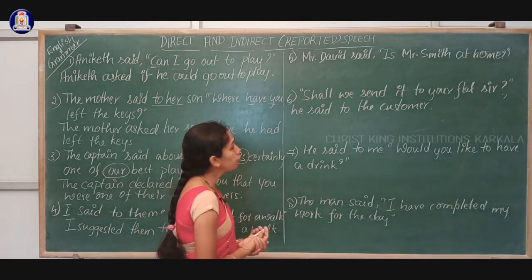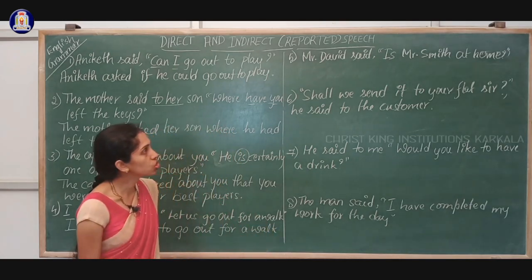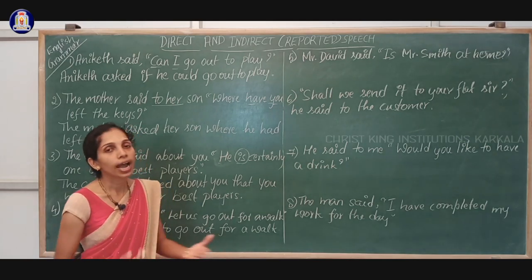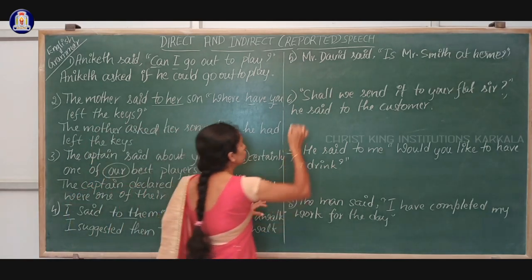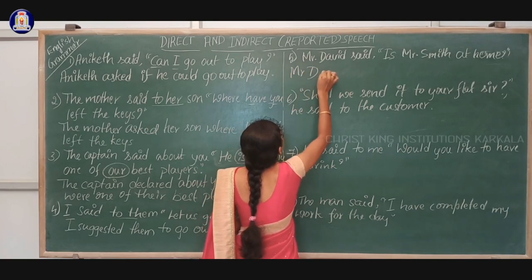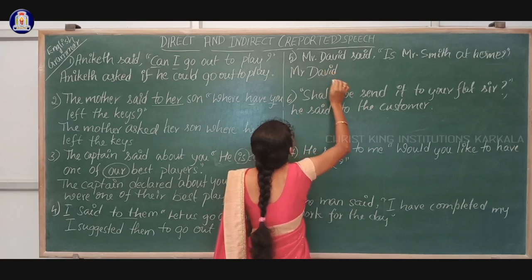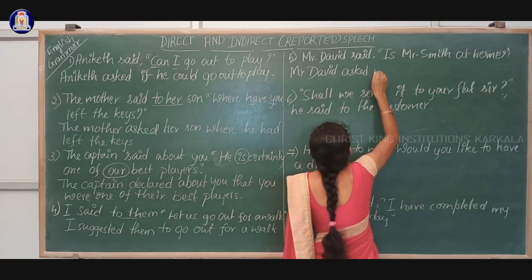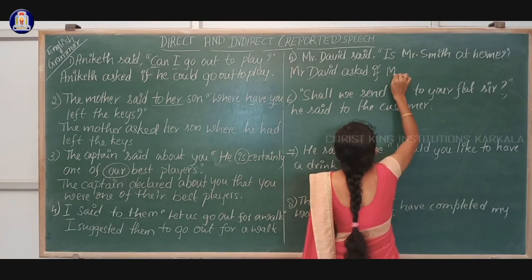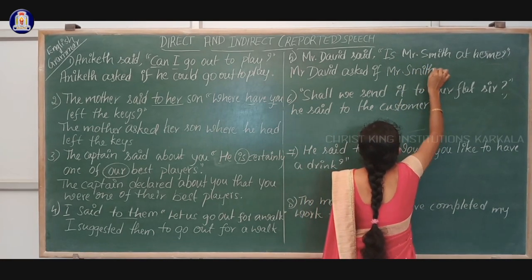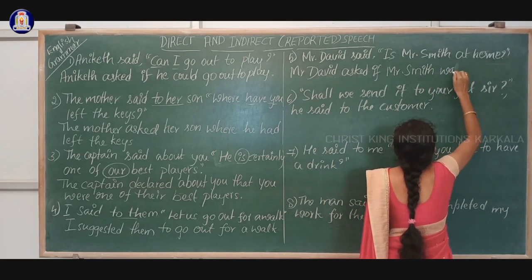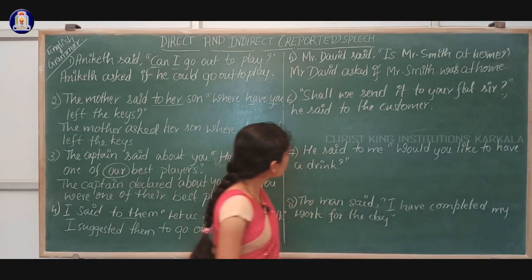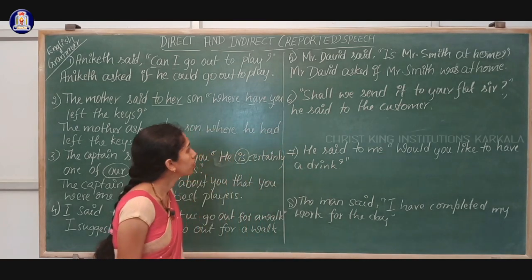Let us look at the fifth question. Mr. David said, 'Is Mr. Smith at home?' What kind of sentence is this? Of course it is an interrogative sentence and it is a yes or no question. So how to write? Mr. David asked if Mr. Smith was at home.